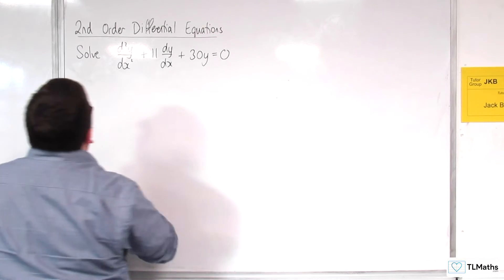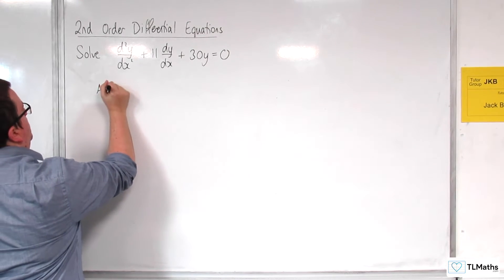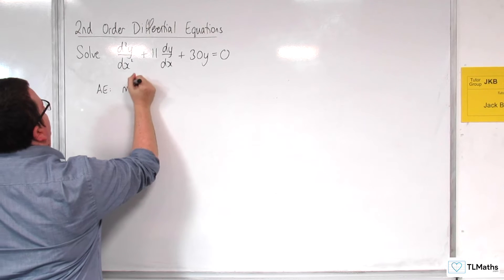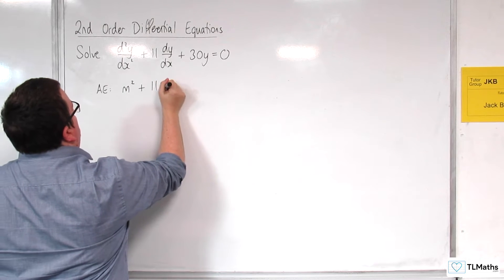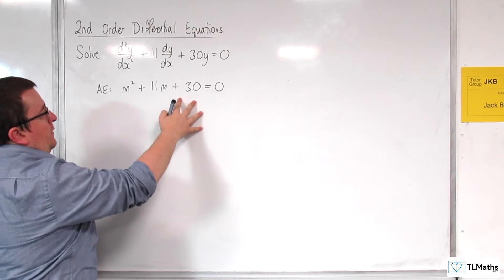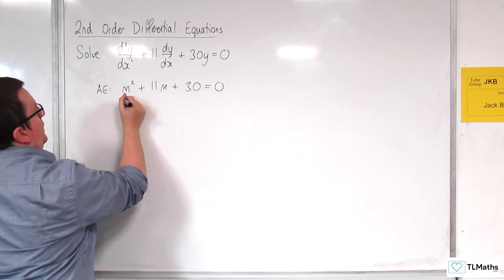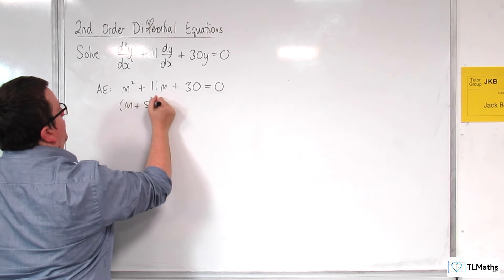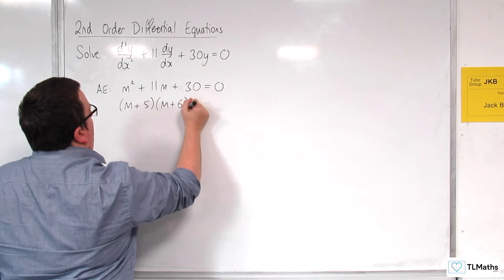So we can write down the auxiliary equation as m² + 11m + 30 = 0. This is a quadratic that we can factorize. So that would be (m + 5)(m + 6) = 0.